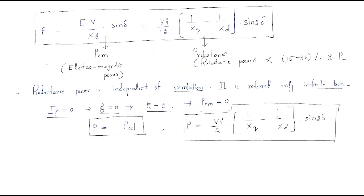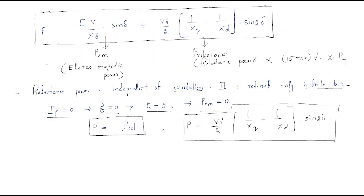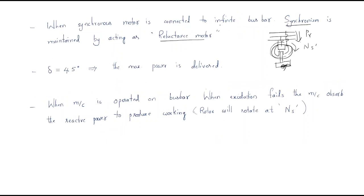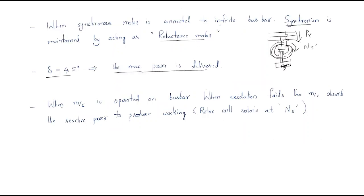We can say that when δ equals 45 degrees, the maximum reluctance power is delivered. When we substitute δ = 45°, it becomes sin(2 × 45°) = sin(90°) = 1, so the reluctance power reaches its maximum value.